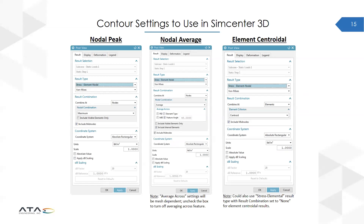The contour settings to use in SimCenter 3D to achieve nodal peak, nodal average, and element centroidal stress plots are shown on this slide. For nodal average, there are average across settings that are mesh dependent and could be the topic of their own webinar. The main point is that unchecking the box turns off averaging across that feature — for example, unchecking the PID box means SimCenter 3D will not average across different property IDs. For element centroidal, the settings shown are for the stress element nodal result type, but you could also achieve element centroidal plots by choosing the stress elemental result type and setting result combination to none.